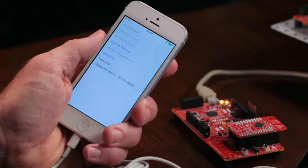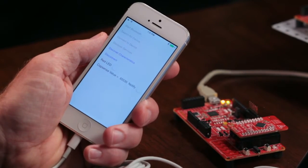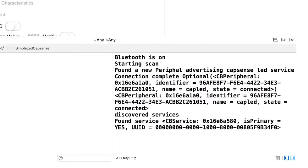So I'll press Discover Services. That will cause the peripheral to do a service discovery and tell me all of the services that are available on the device.